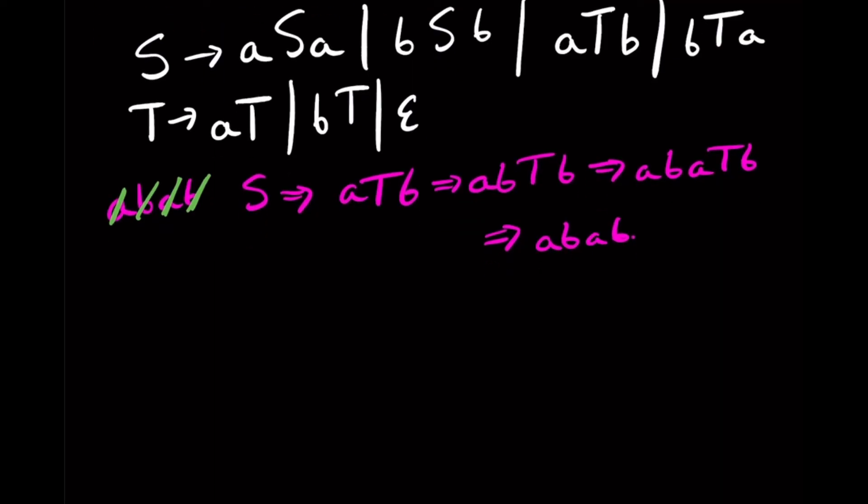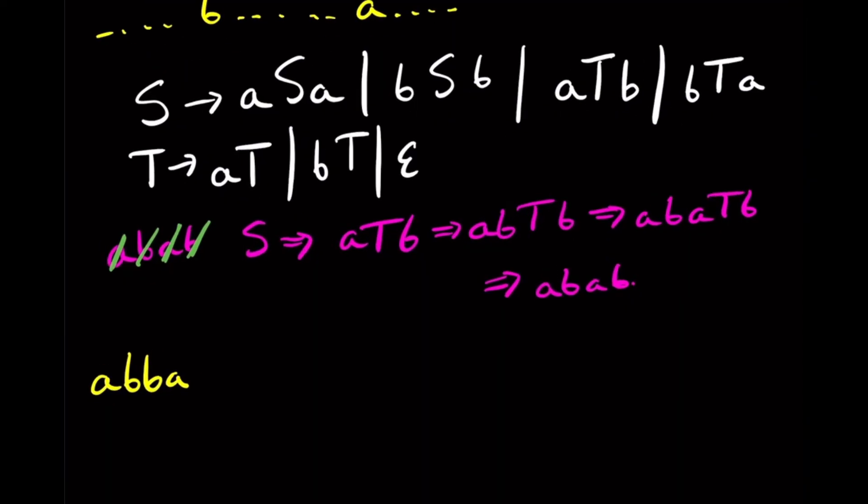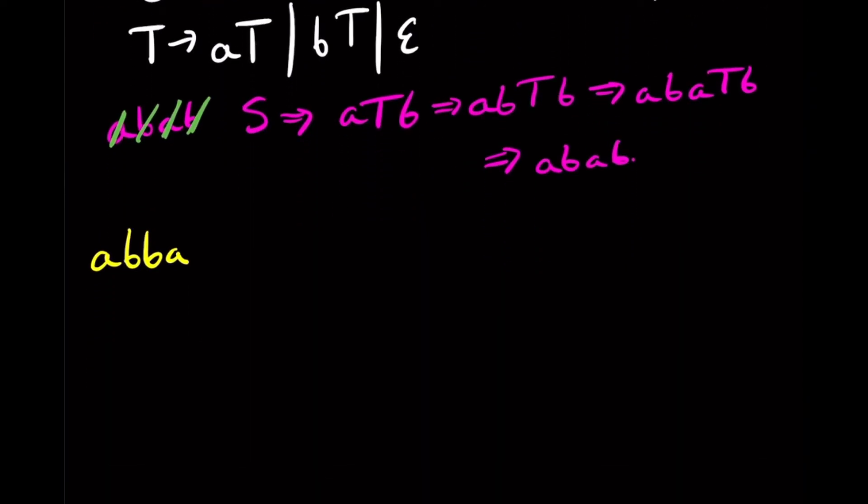So then, now let's try to do the example that is a palindrome. So A B B A. So we have to apply this rule right here, because none of the other ones apply in this situation. It's the only one that starts and ends with an A. So we have to do it this way.